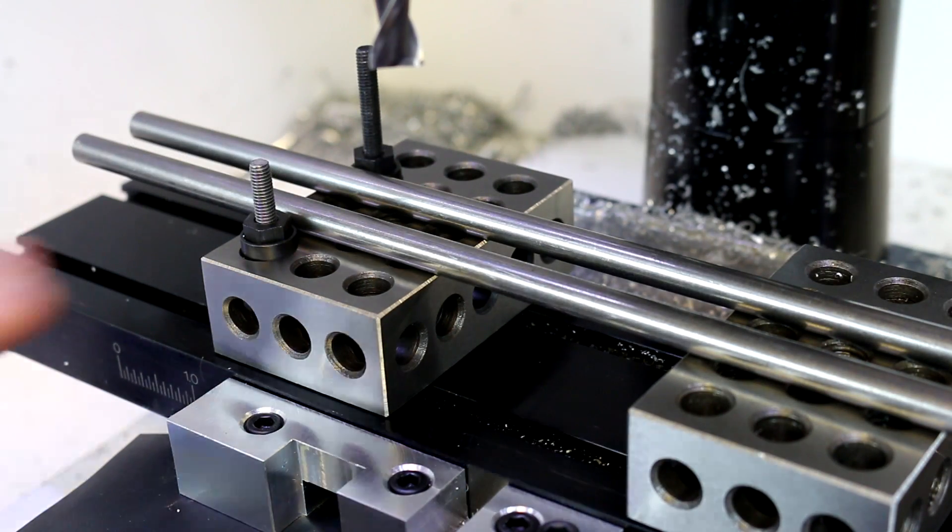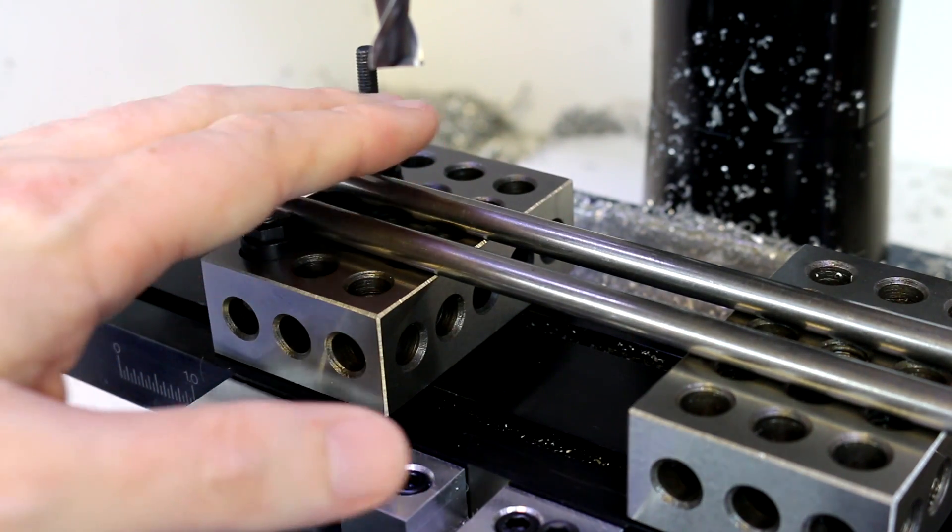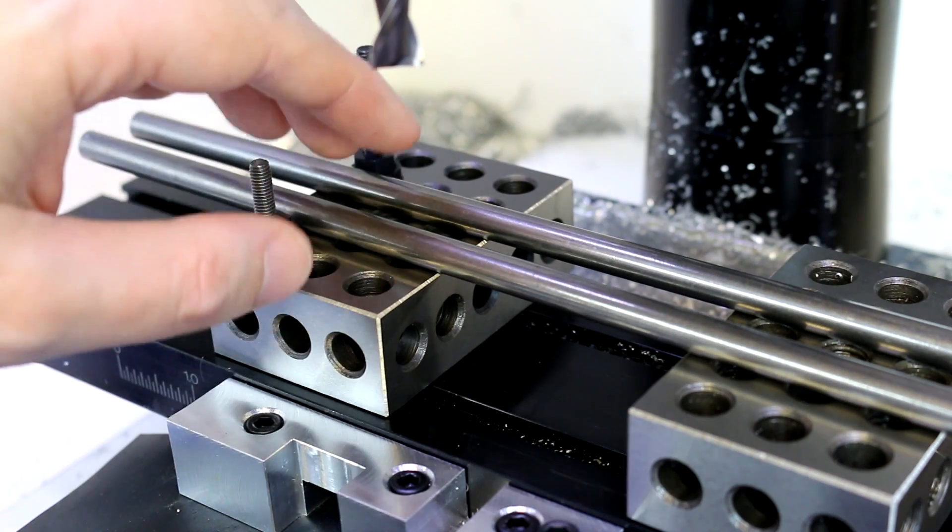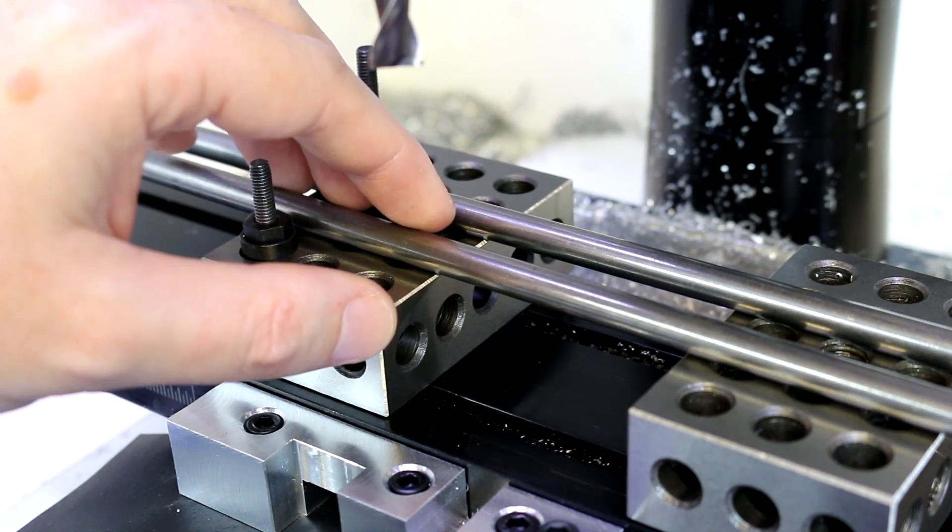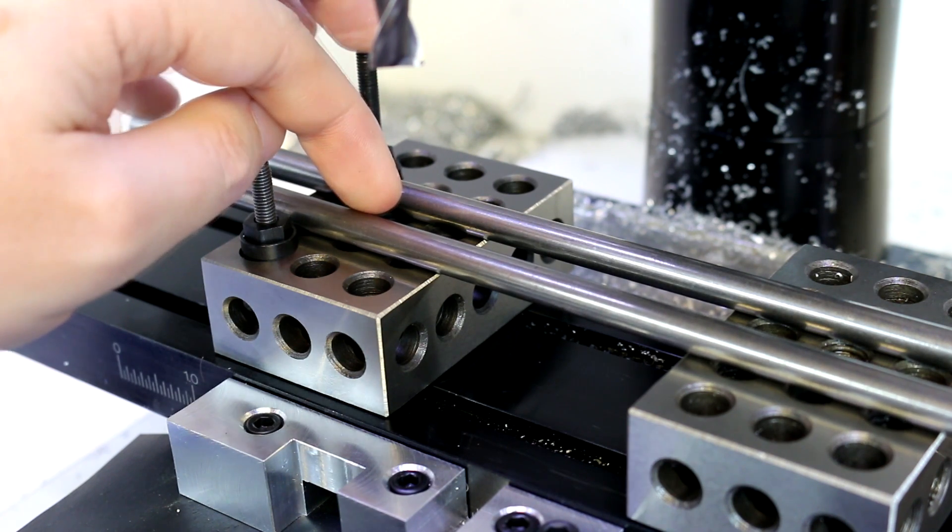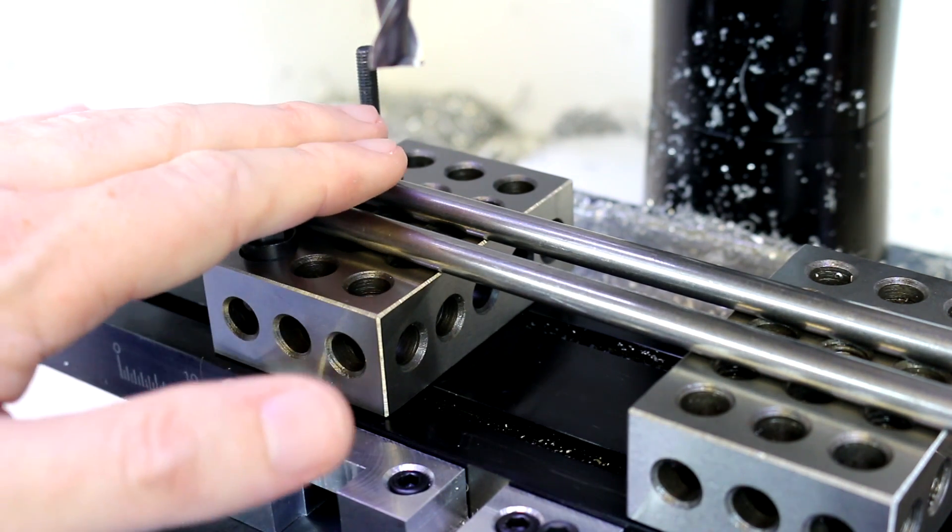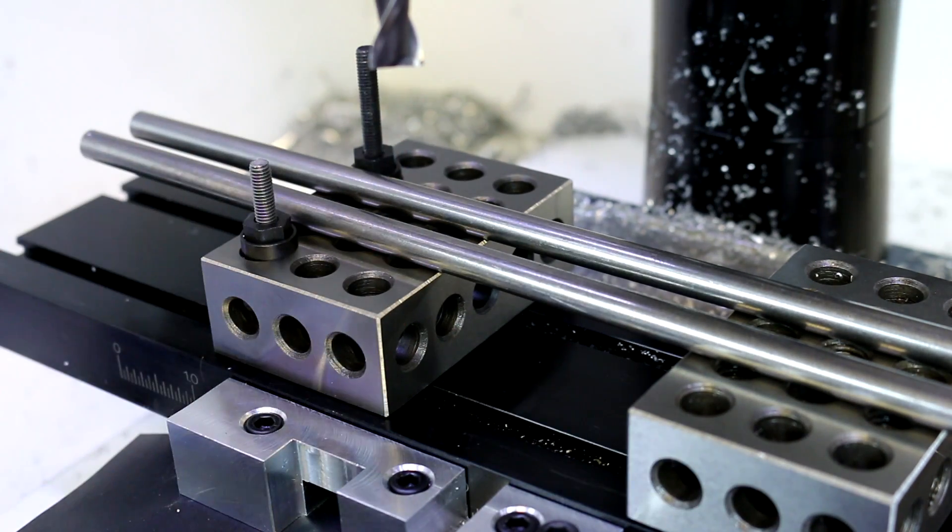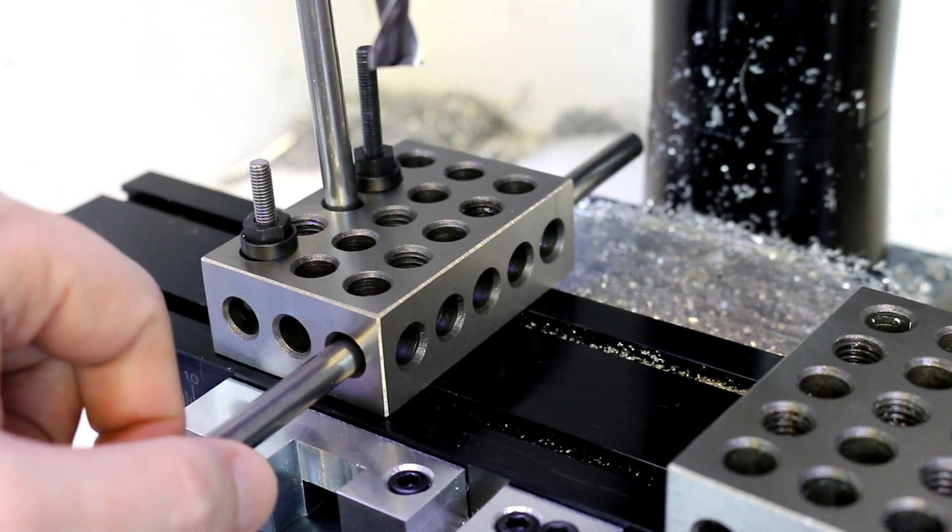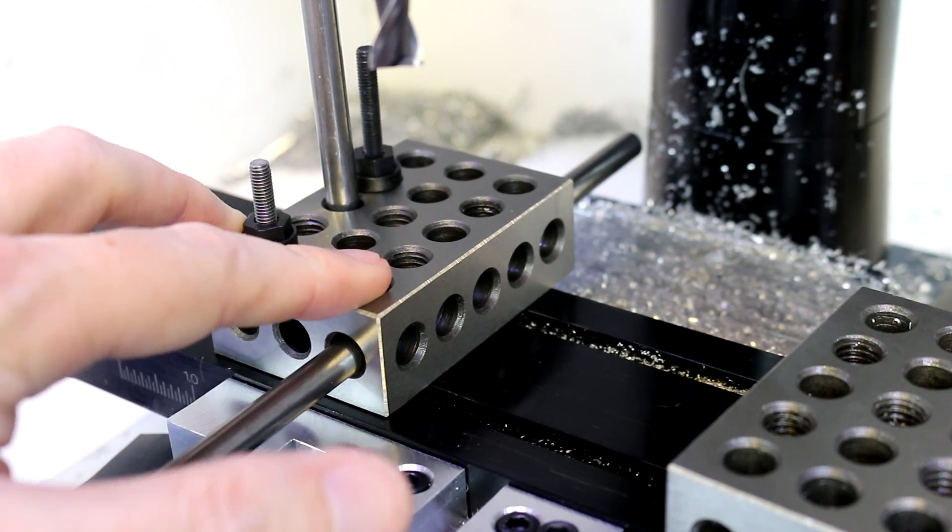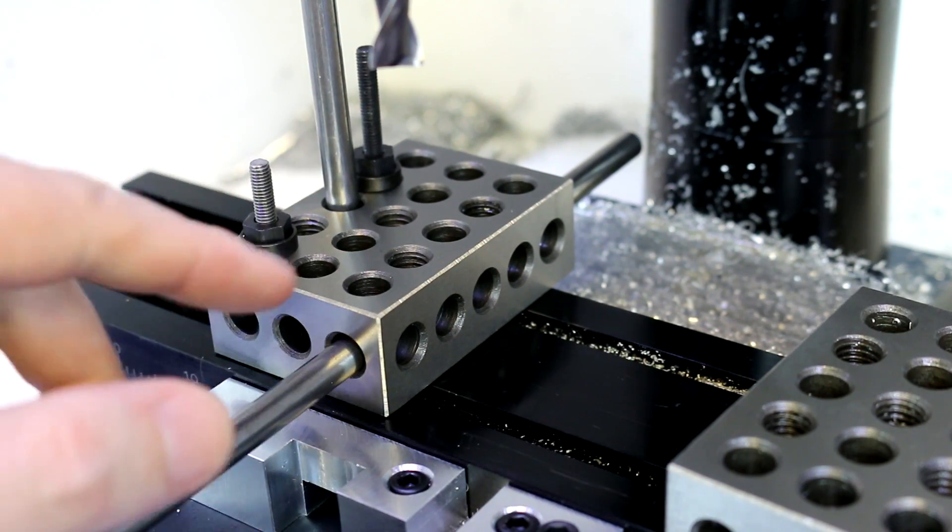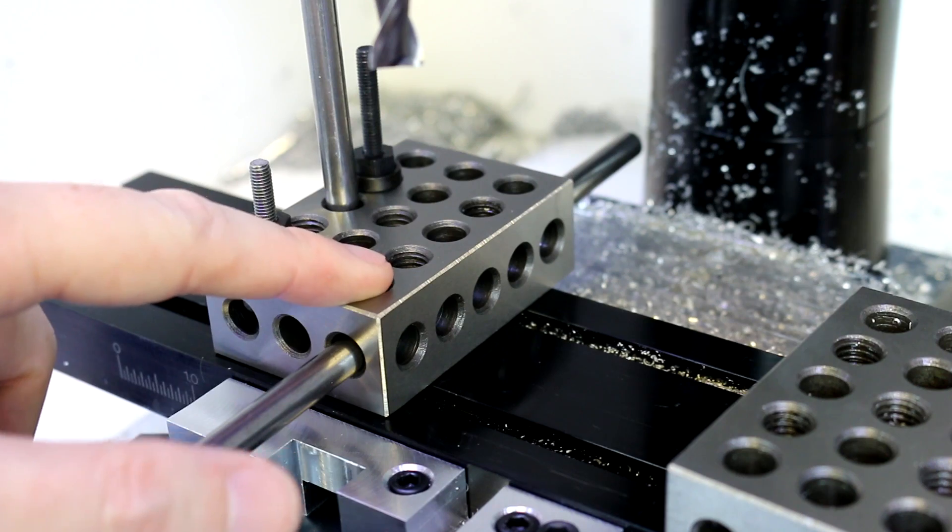So the materials we're going to use on this are going to be some steel rods. This will be the first time that we're cutting steel on the mill in this training series. These are 12L14, which is a leaded steel considered to be free machining. I've selected it because of its ease in machining for our first steel. These are 5/16 inches in diameter. I've selected 5/16 because it will freely slide through the holes. Depending on your blocks and their quality of machining, these are fairly cheap blocks.